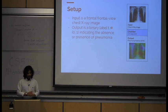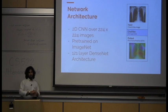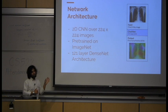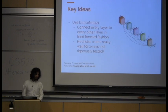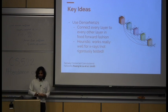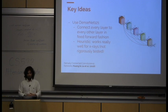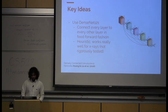We take a frontal view chest x-ray, pass it through a convolutional neural network, and output the probability of pneumonia. The network architecture is a 2D CNN similar to what you'd use for ImageNet image classification — specifically a DenseNet architecture. Earlier we talked about skip connections in ResNets; DenseNets take the idea to an extreme, connecting every layer to every other layer. We found this works particularly well for x-rays, possibly because of something about the architecture that suits x-ray pathology identification.